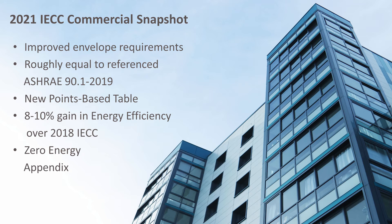One of the new requirements is a thermal envelope certificate, which is similar to the Residential 2015 IECC Energy Efficiency Certificate. The new commercial certificate must include R-values of insulation installed in opaque envelope assemblies, and the U-factors and solar heat gain coefficients of fenestration. Results from any building envelope air leakage testing performed on the building must also be included on this certificate.